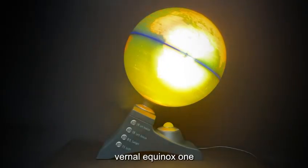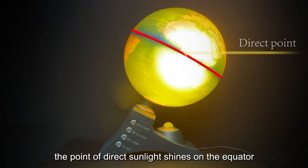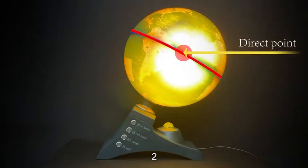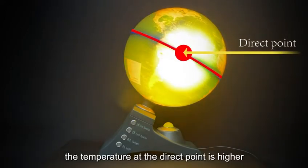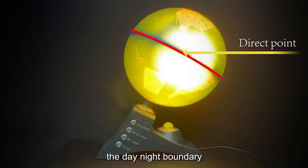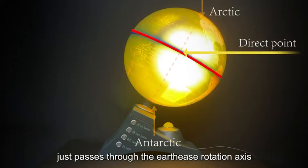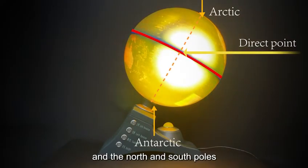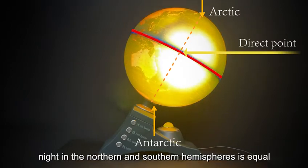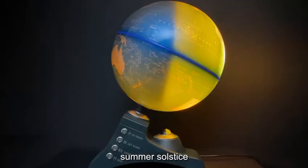Vernal Equinox: The point of direct sunlight shines on the equator, and the temperature at the direct point is higher. The day-night boundary just passes through the Earth's rotation axis and the north and south poles, so the time of day and night in the northern and southern hemispheres is equal.